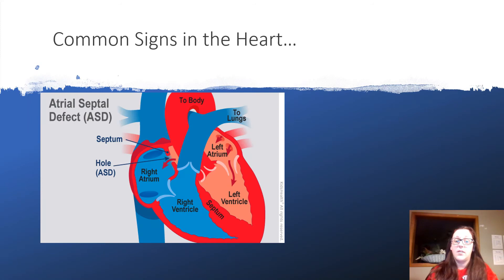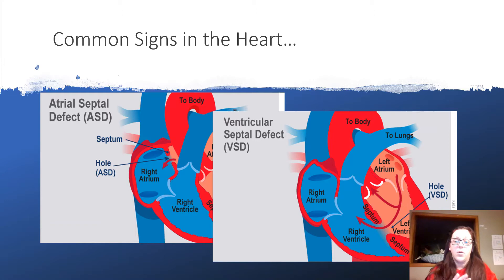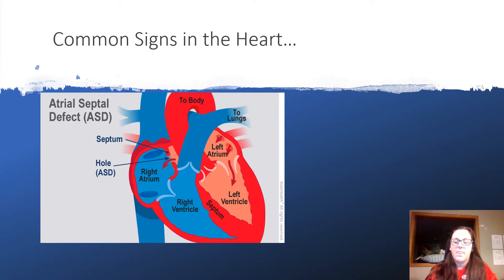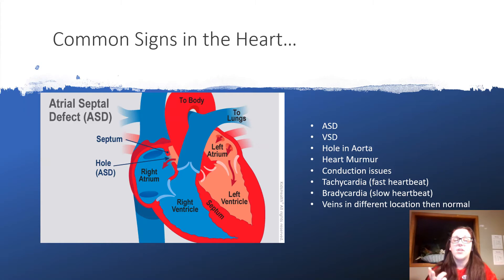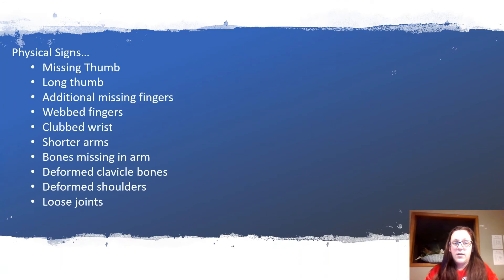Common signs in the heart: most commonly people will have ASDs, which is an atrial septal defect — that's a hole between the two upper chambers of the heart. A VSD is a hole or holes between the two bottom ventricles of the heart. A couple others are holes in the aorta, conduction issues — that's the part of your heart that controls your heartbeat — tachycardia which is a fast heartbeat, bradycardia which is a slow heartbeat, and you can also have veins that are structured differently.